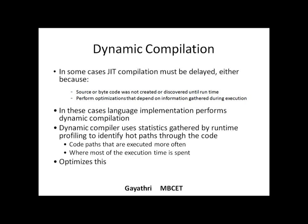A dynamic compiler uses data logs or statistics collected by runtime profiling to identify hot parts through the code. Hot parts are code that are executed more often, or where most of the execution time is spent. The dynamic compiler identifies these hot parts at runtime and then optimizes them.